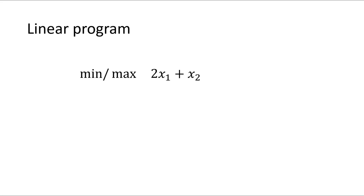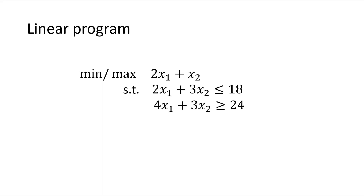In a linear program you have an objective function where you minimize or maximize a linear objective. Then you have linear constraints — these can be less-or-equal constraints, greater-or-equal constraints, or equality constraints. Often for some variables you have non-negativity constraints, which are actually a special case of a greater-or-equal constraint.